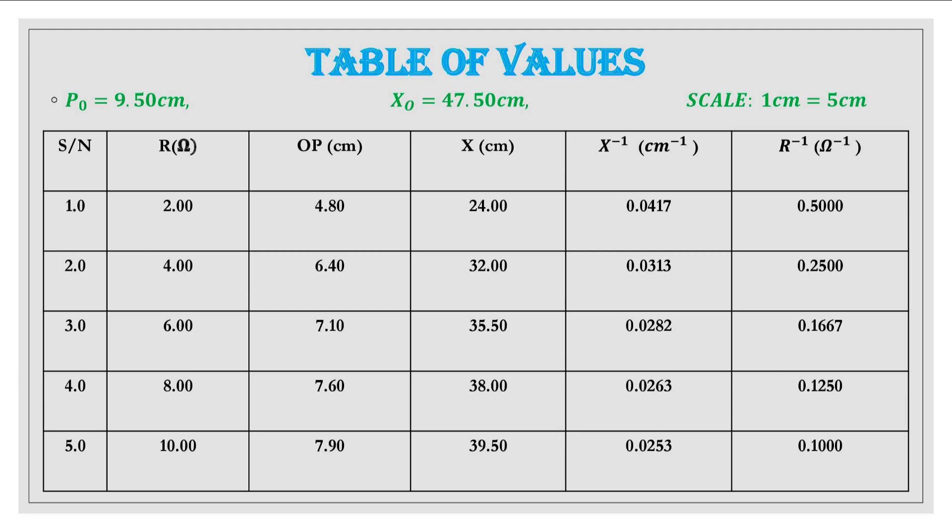Furthermore the instruction said that we should get the inverse of X and the inverse of R and then that is also done here. Remember that for every reciprocal, the decimal place on the table for physics representation must be minimum three decimal places. You can see I took care of that and then everything is represented on the table.